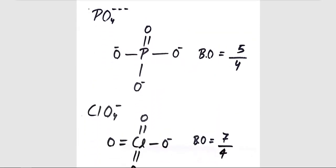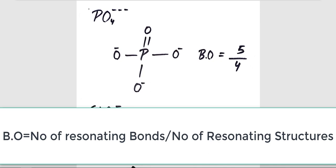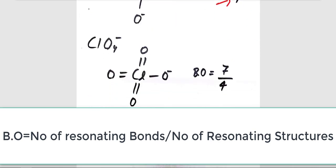Now let's talk about PO4³⁻. In this, we can easily see that there are total 5 bonds, number of resonating bonds. And we have this small 4 here. And this is the bond order.